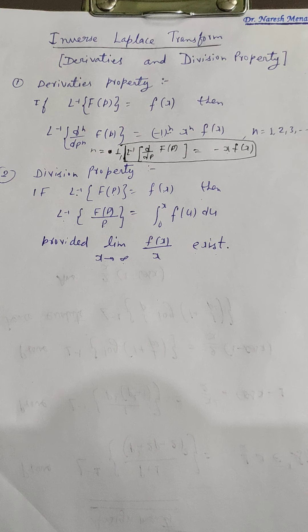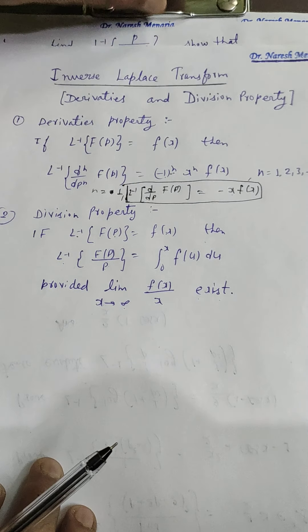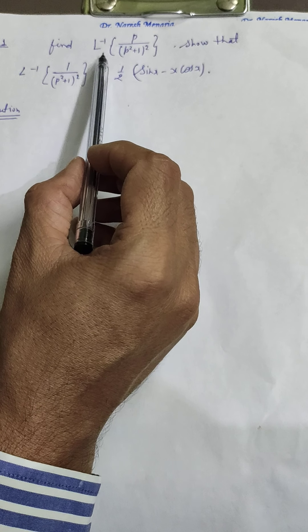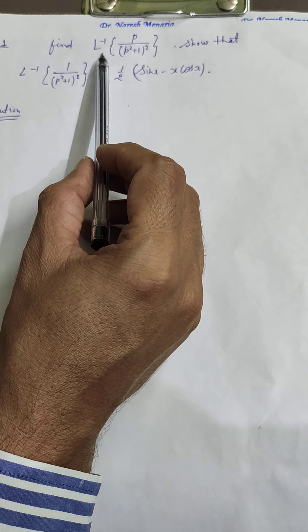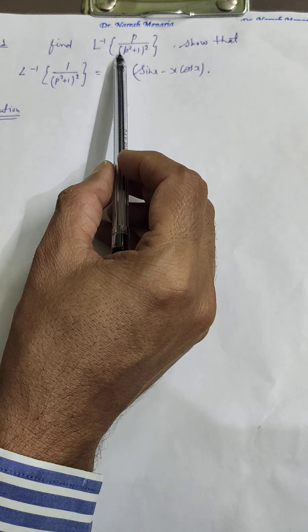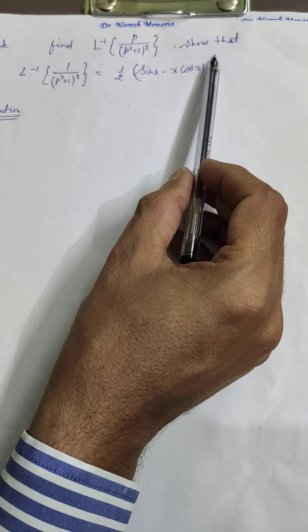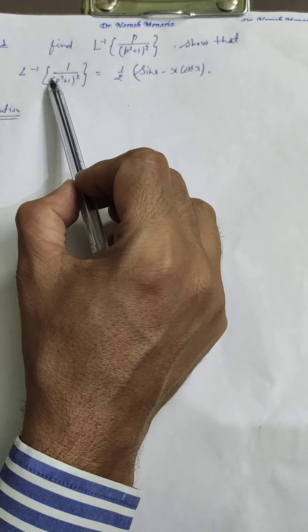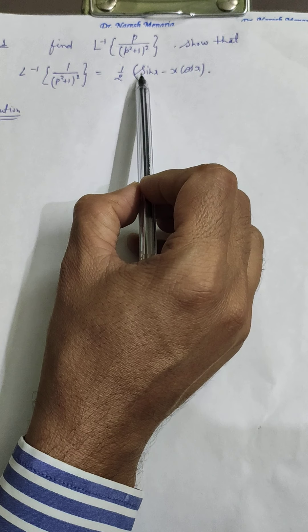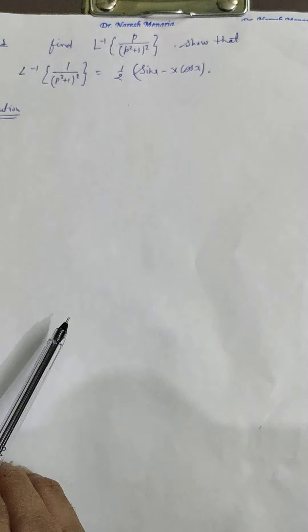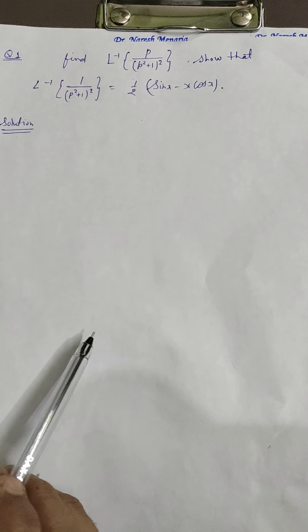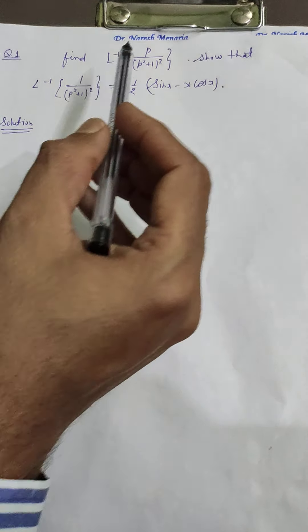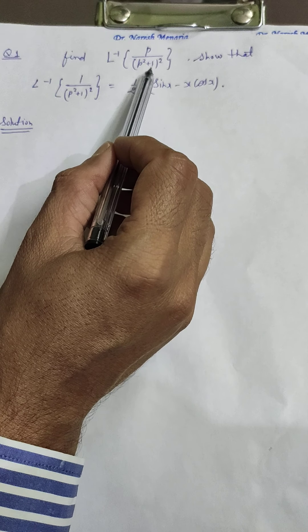Now we take a question in which both these properties are applied. The question is: find the L inverse of p/(p²+1)². Also, show that L inverse of 1/(p²+1)² equals (1/2)(sin x − x cos x).